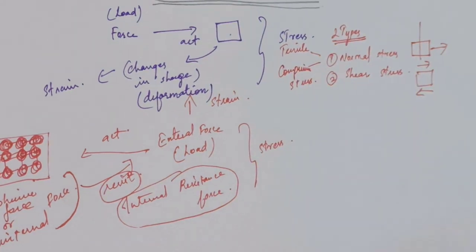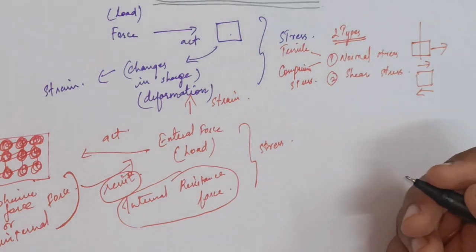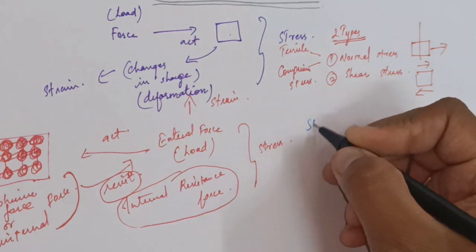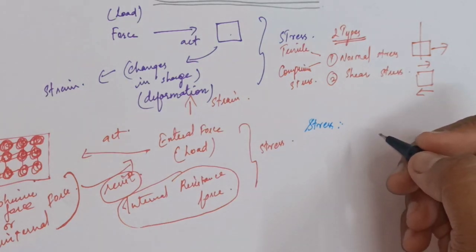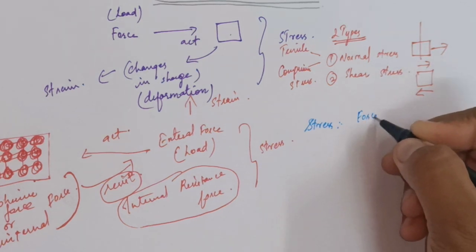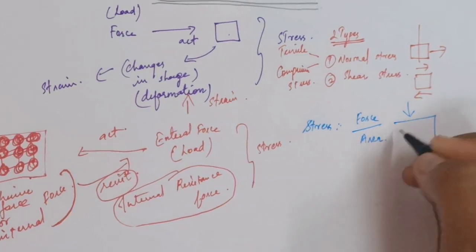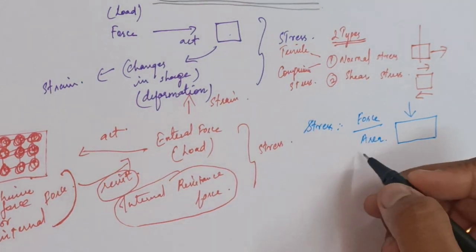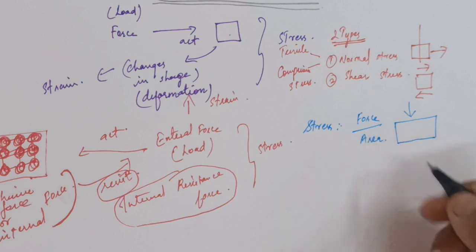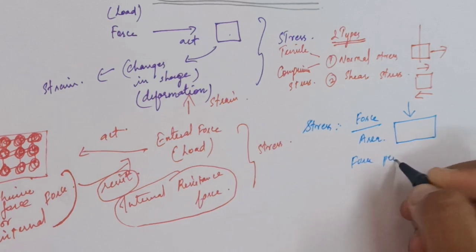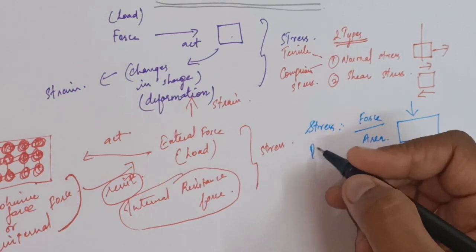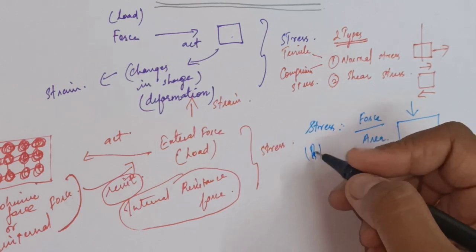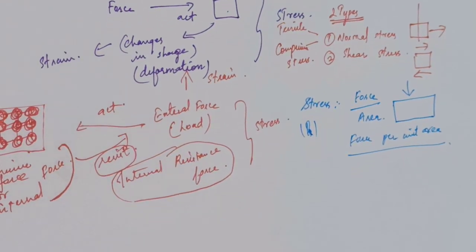Before going into the types in detail, let us see the formula — how will you identify how much stress the object is undergoing? You can't directly measure the internal stress created inside the body, so instead we calculate it by force divided by area, meaning the force created over a particular surface area. This is force per unit area. The unit for stress is Pascal.